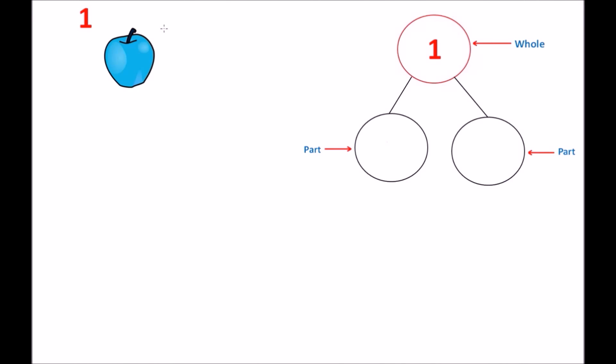The first number bond we're going to take a look at is the number 1. We have one apple on the screen. The first thing we can always do is a 0, so we know we have a 0 and a 1. When we create the number bond, on the left side of the part we have a 0, and on the right side we have a 1. So our whole is the number 1, and the parts are a 0 on the left and a 1 on the right.